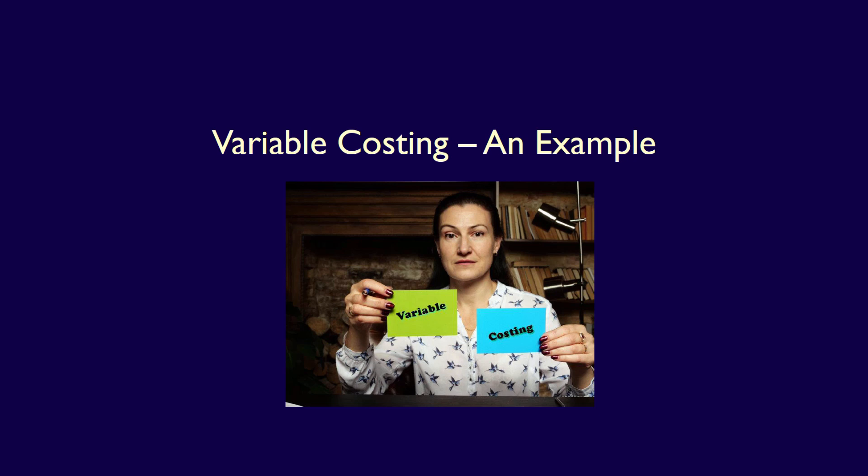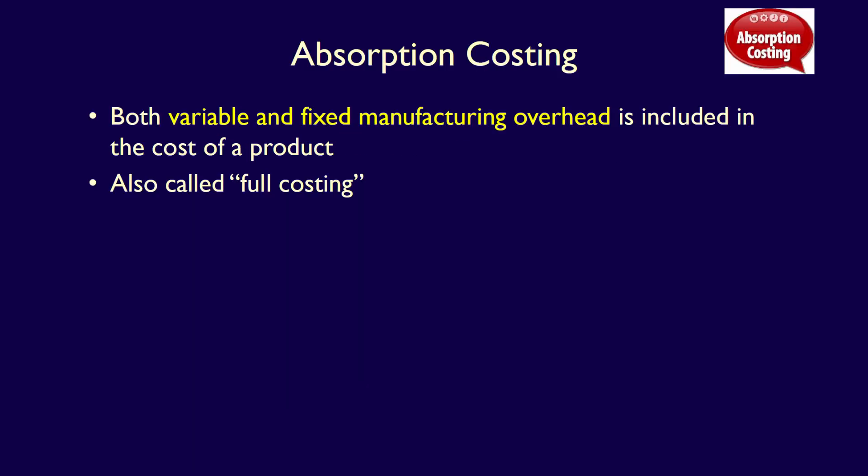In a previous video, we completed an absorption costing income statement. In this video, we'll prepare a variable costing income statement. Recall that under absorption costing, fixed manufacturing overhead costs are absorbed into the cost of the product — both fixed and variable overhead are treated as inventoriable product costs. Absorption costing is required in Canada under both IFRS (International Financial Reporting Standards) and ASPE (Accounting Standards for Private Enterprises).